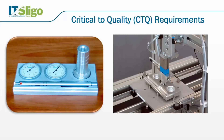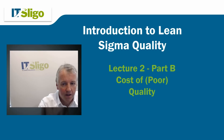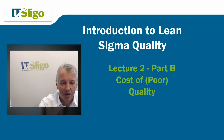In summary, critical-to-quality characteristics (CTQs) are the specific, measurable characteristics of the product or process required for customer satisfaction. That's the end of part B — in part C we'll go on and map the process.